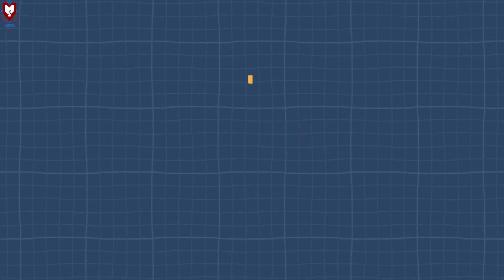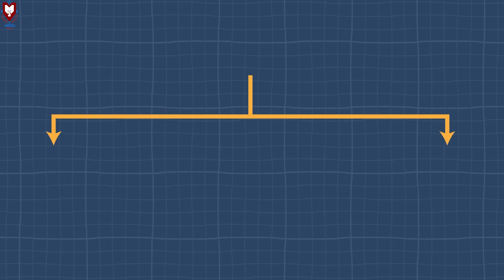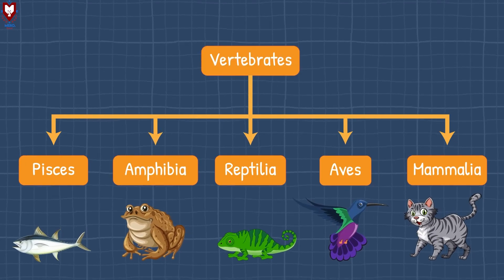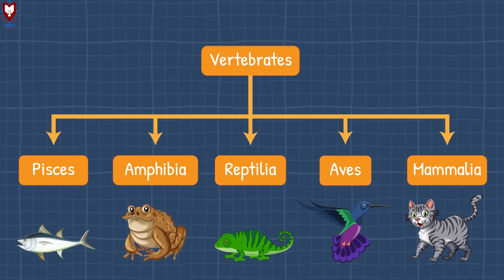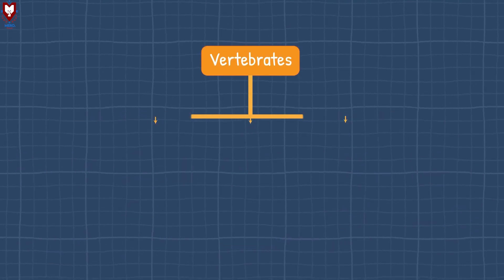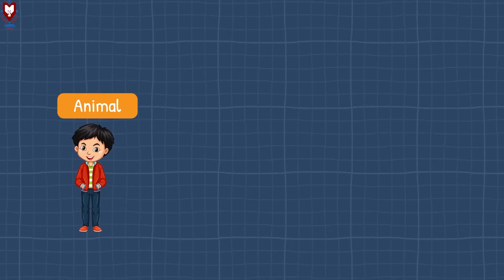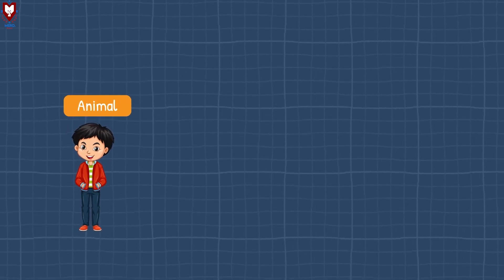Now we are at the end of this video. Today we talked about different types of vertebrates, and we also talked about human beings being in the category of animals.